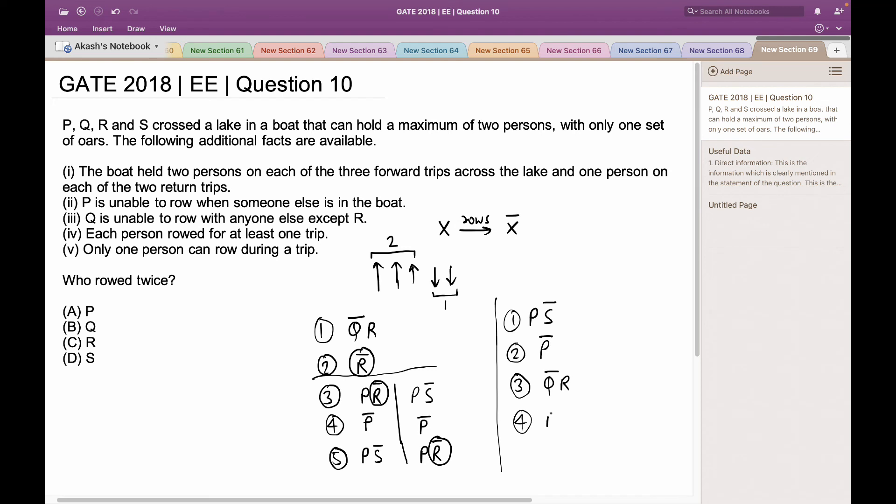And we can return R in the backward trip, as Q can never travel without R. Once R is on the other side, we can take P with R, with R rowing back. In this case, I can see that R is the only person that has rowed twice.